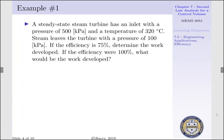Now, let's look at example 1. Say a steady-state steam turbine has an inlet with a pressure of 500 kPa and a temperature of 320 degrees Celsius. Steam leaves the turbine with a pressure of 100 kPa. If the efficiency of the turbine is 75%, we want to determine the work developed. Also, we want to determine the work developed if this was assumed to be a 100% efficient turbine.